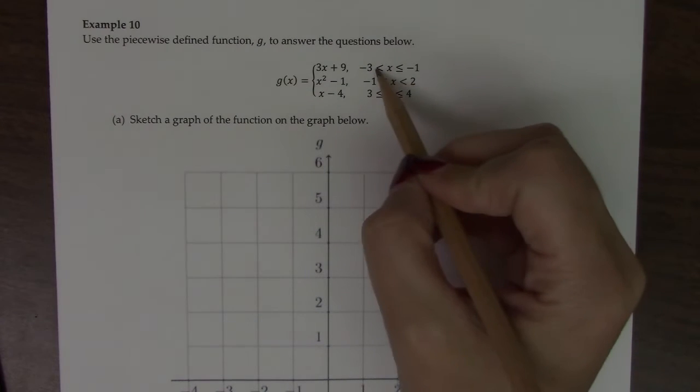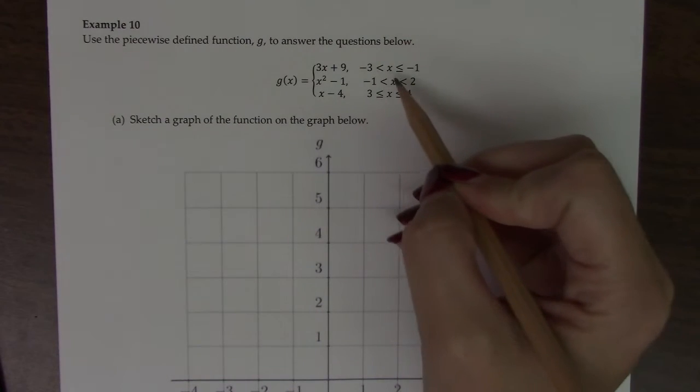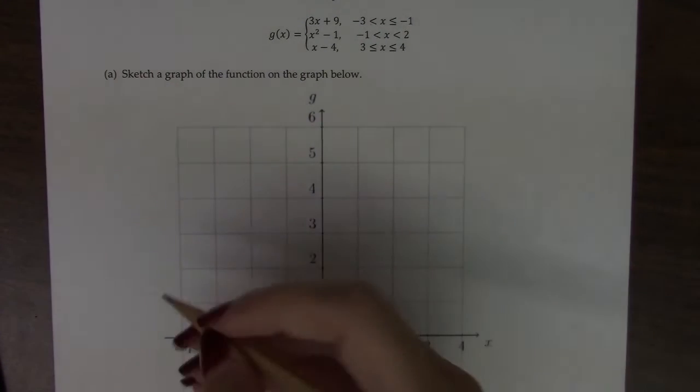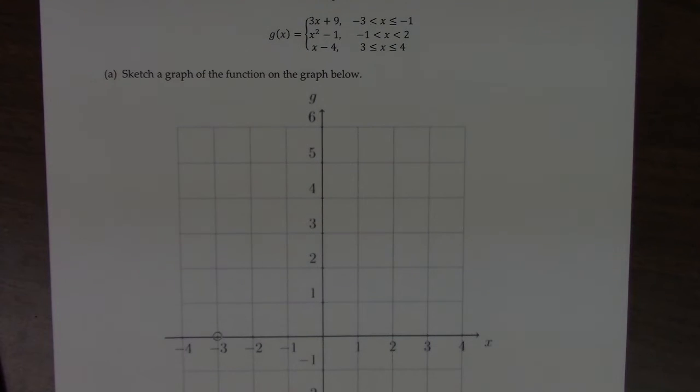But also notice in the interval here, negative 3 is not included. So that means when I draw it, negative 3, 0, I need to put an open circle there. I'm not going to let it exist at 3. So then I'm going to plug in negative 1. So negative 3 times negative 1 is negative 3 plus 9 is 6.